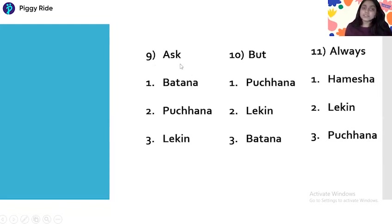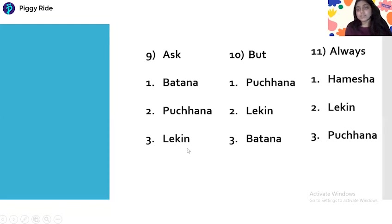Question nine is 'Ask.' Ask means Pochna. The options are: number one Batana, number two Pochna, number three Lakin. The correct option is Pochna. Ask means Pochna.